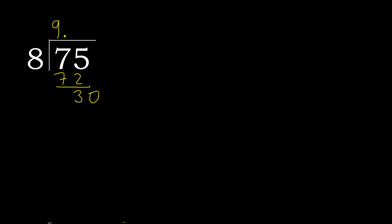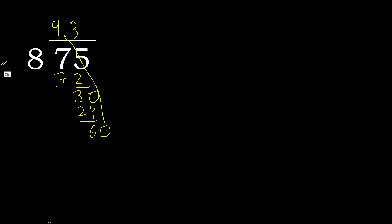8 multiplied by 4 is 32, which is greater. So 8 multiplied by 3 is 24. Subtract: 30 minus 24 — complete. The decimal point is placed here.